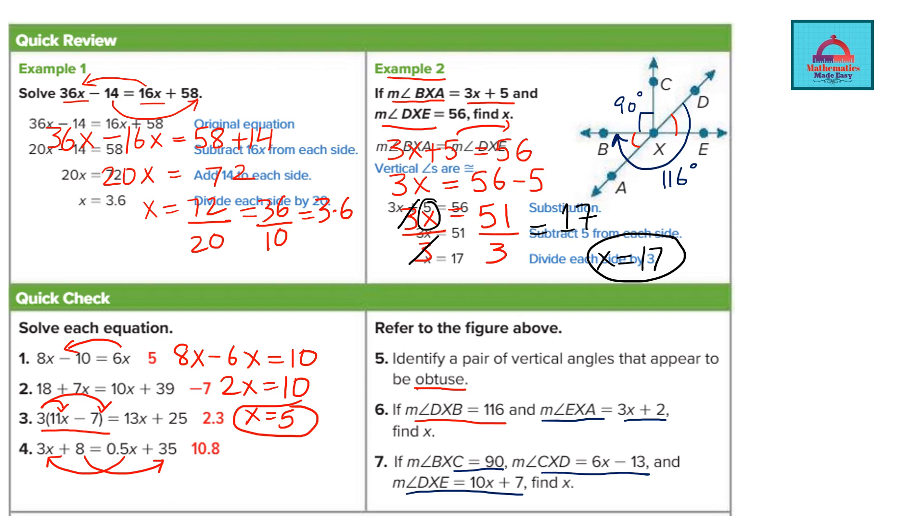Now look at the angle CXD. I will again change color here. So CXD is the small angle and DXE is the small angle. Now if this is 90 can I say angle CXD is also going to be 90.